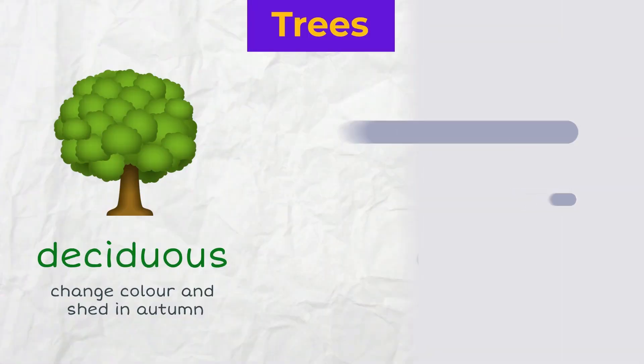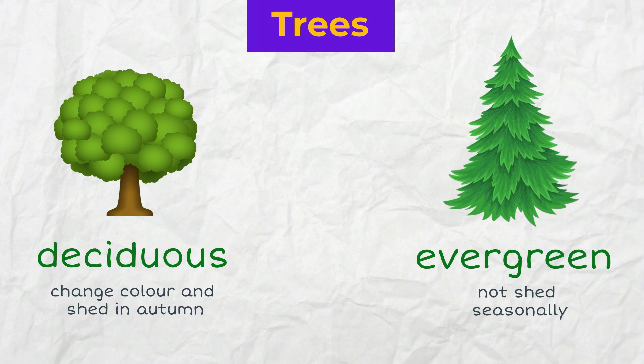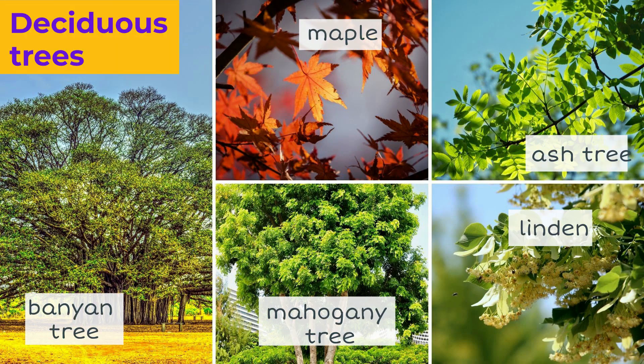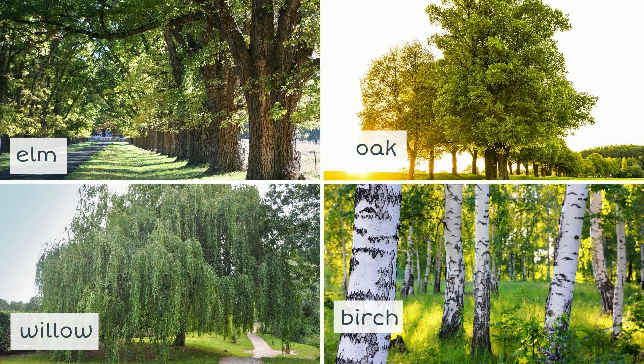Trees and bushes can be deciduous and evergreen. The leaves of deciduous trees change color and shed in autumn. Examples include: bunion tree, maple, ash tree, the mahogany tree, also different types of linden, elm, oak, willow and birch.